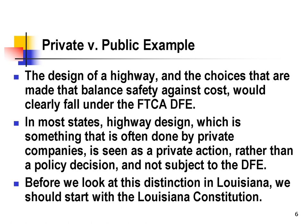A classic example of the private versus public distinction is construction of highways. Under the Federal Tort Claims Act, the design of a highway — the choices that are made to balance safety against cost, which could include whether you have trees in the median, cable barriers, or cleared medians — all of these choices would fall clearly under the discretionary function exception. Even a lot of choices about the surface and construction of the highway would fall under the discretionary function exception.